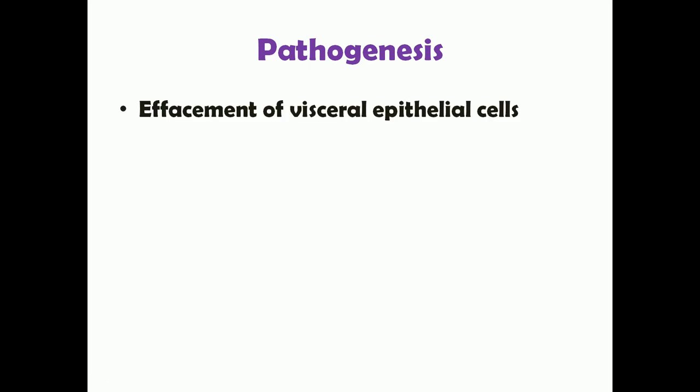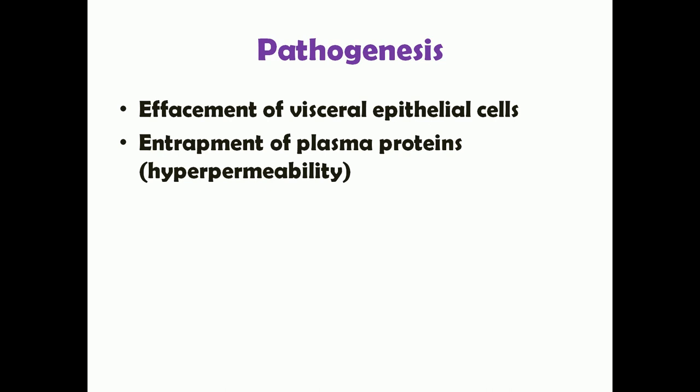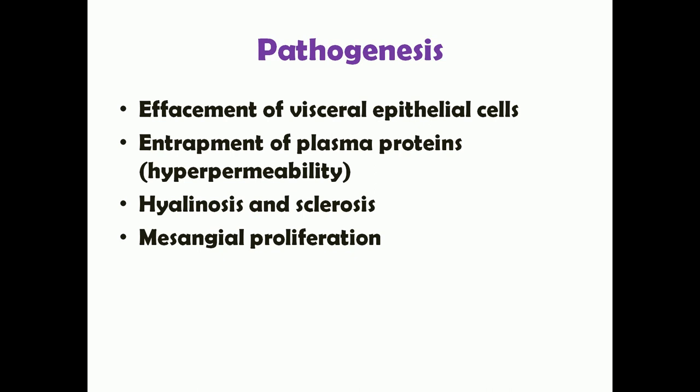Regarding pathogenesis: effacement of foot processes of visceral epithelial cells (podocytes) affects the glomerular barrier, causing hyperpermeability. Plasma proteins that are not normally filtered are now filtered through, leading to deposition of these proteins in the glomeruli. In chronic cases, this leads to hyalinosis and finally sclerosis. Factors such as TGF-beta are involved in mesangial proliferation in focal segmental glomerulosclerosis.